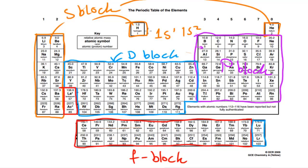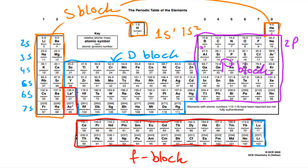So in the S block, we have 1s1 and 1s2, then the 2s orbitals, then 3s, 4s, 5s, 6s, 7s filled in turn. For the P block elements, a similar thing applies: we'd have the 2p orbitals filled — 2p1 through 2p6 — and then 3p, 4p, 5p, 6p continuing down. The D block and F block have a similar structure, but the D block has those strange exceptions we discussed.